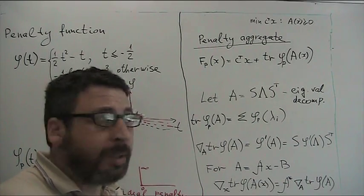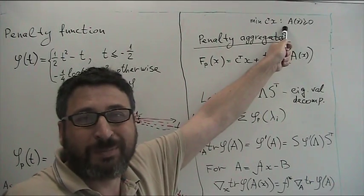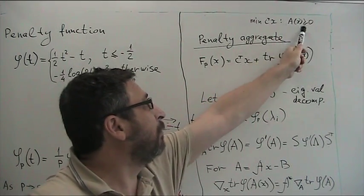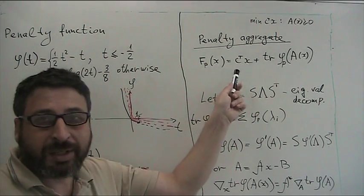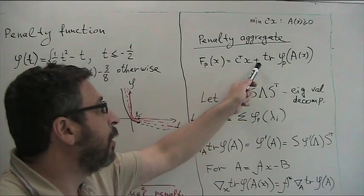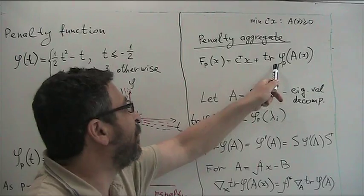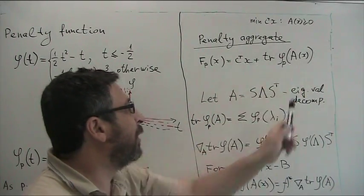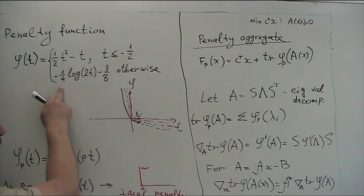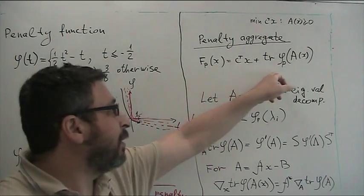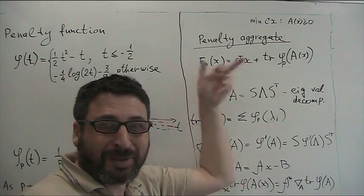Now we can build a penalty aggregate for our optimization problem. The penalty aggregate consists of the objective function plus a penalty for constraint violation. Our penalty will be trace of φ_P of A(x), where φ is a scalar function applied as a matrix function.